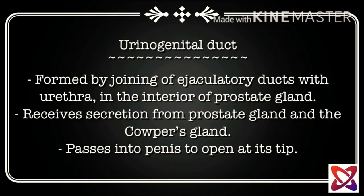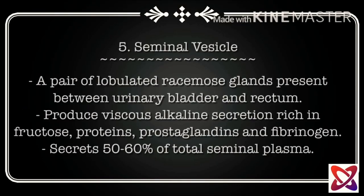The urinogenital duct passes into the penis to open at its tip. The fifth component is the seminal vesicle — a pair of lobulated racemose glands present between the urinary bladder and rectum. It produces viscous alkaline secretion rich in fructose, proteins, prostaglandins, and fibrinogen. It also secretes 50 to 60 percent of the total seminal plasma.